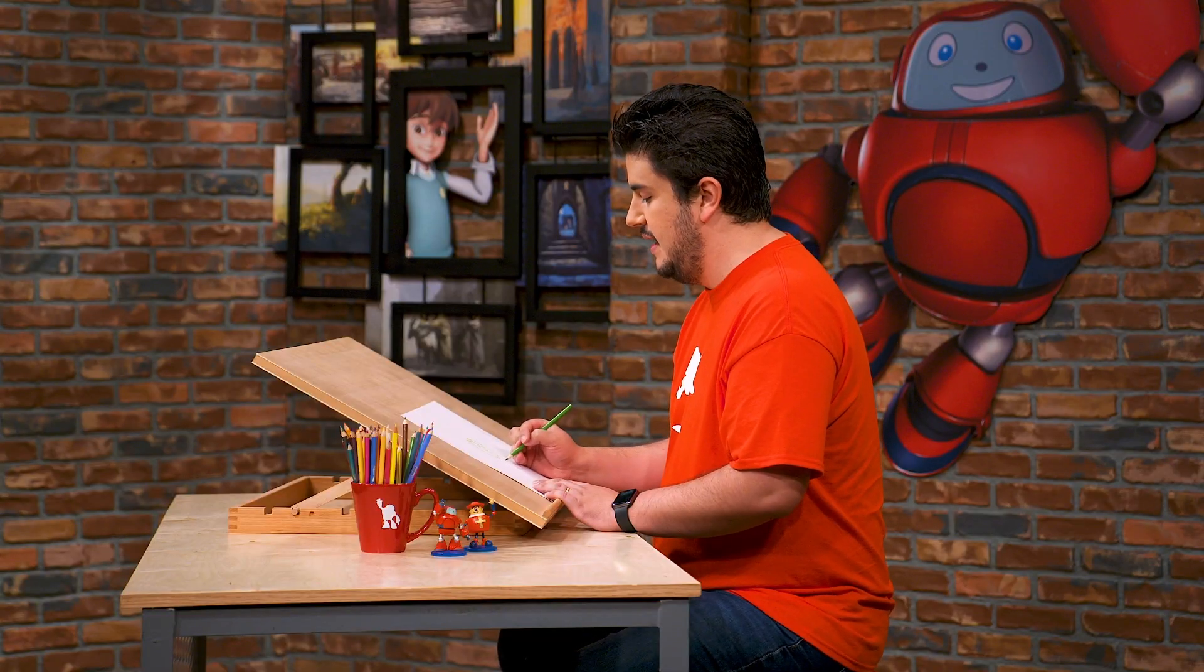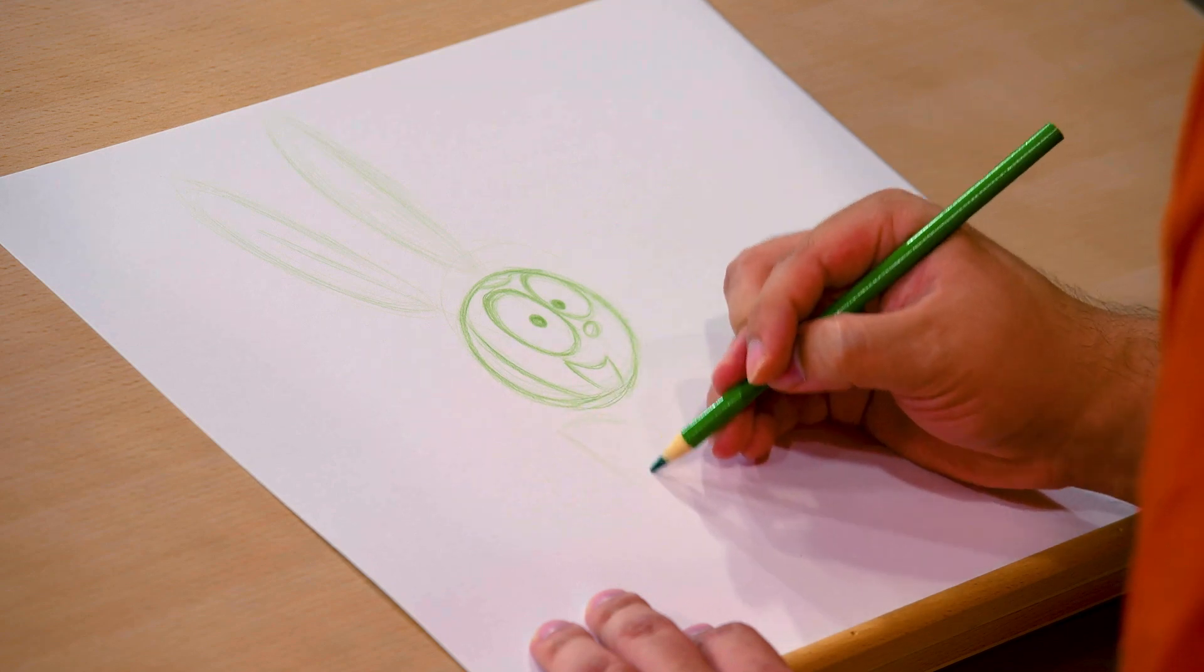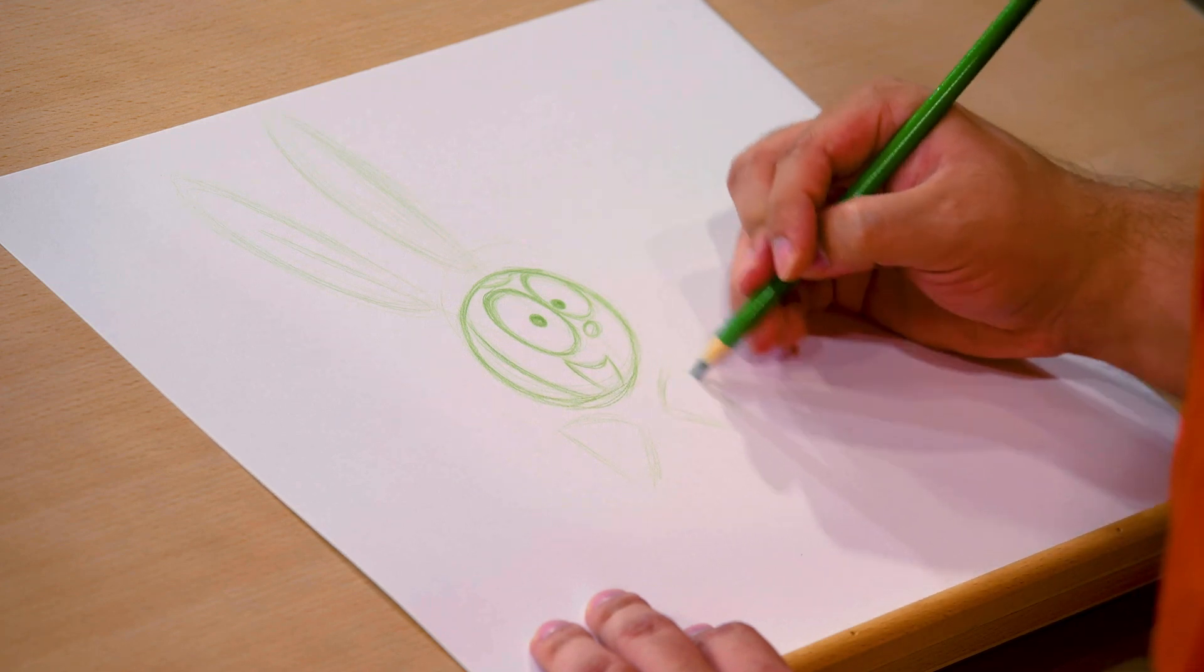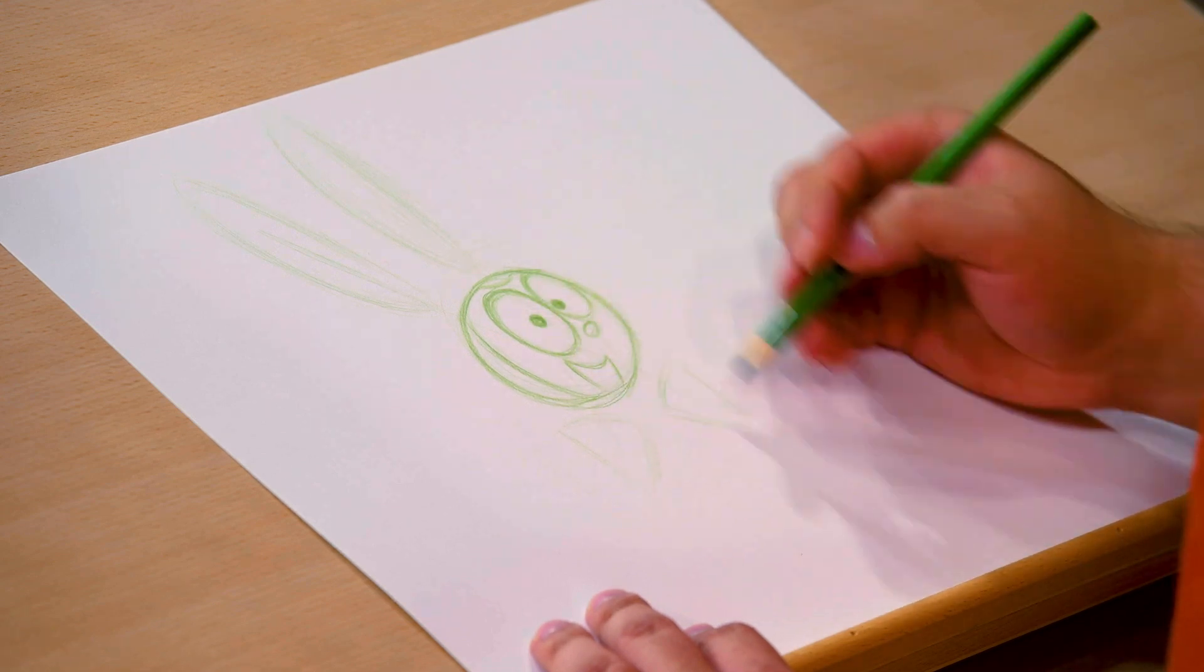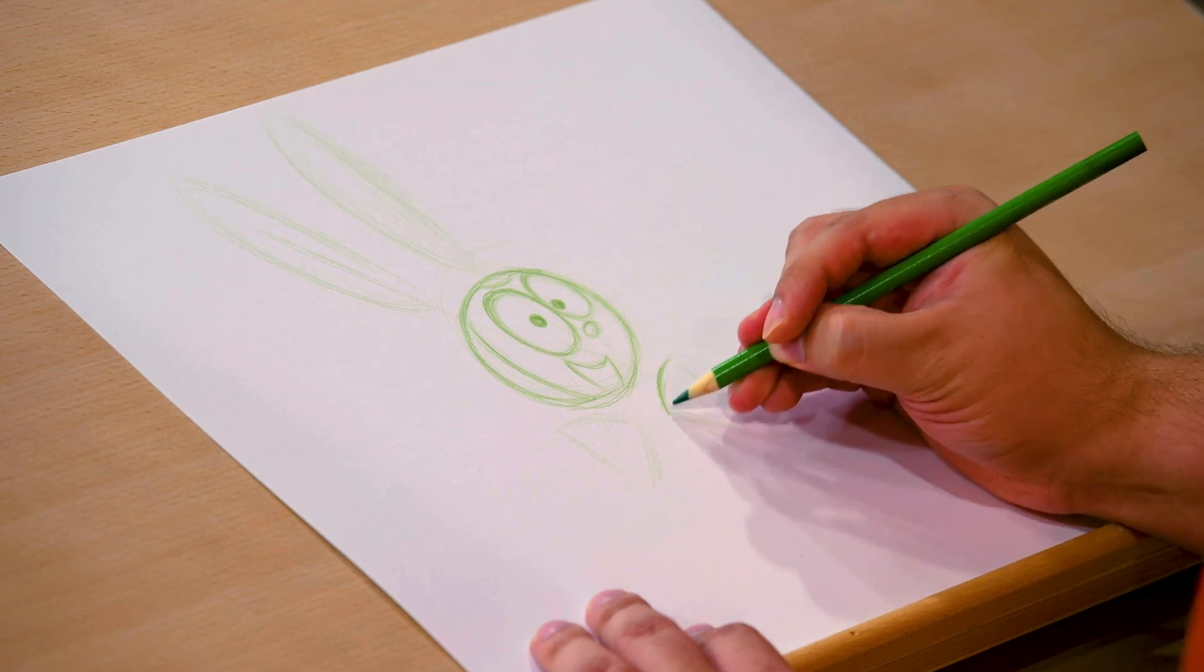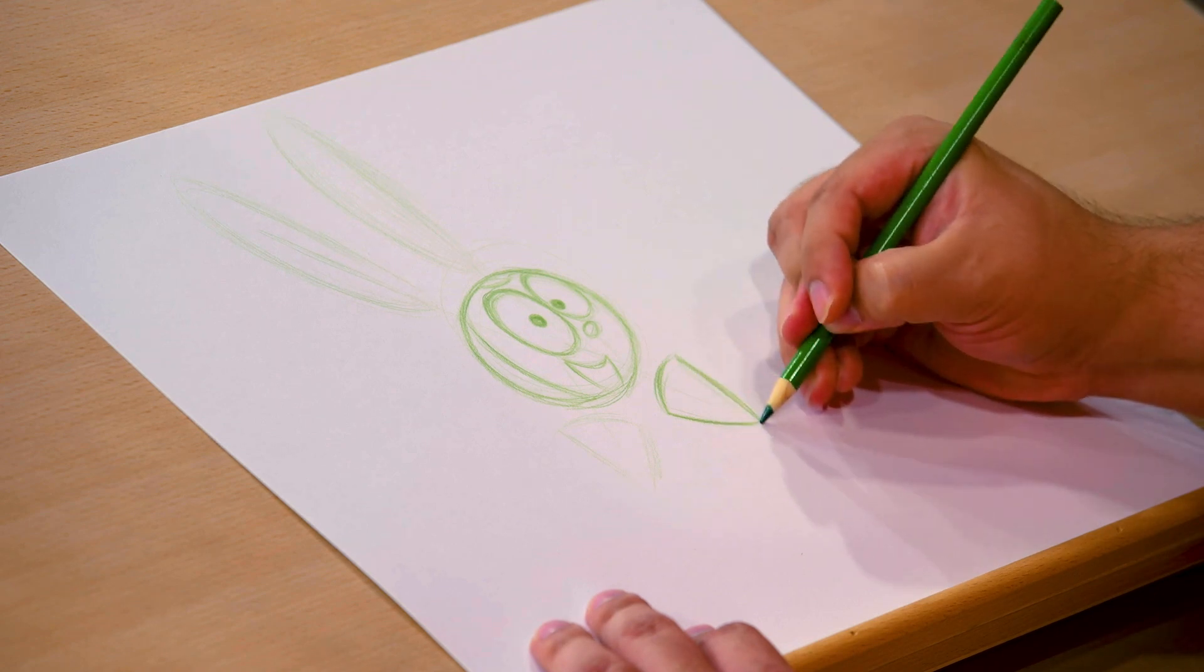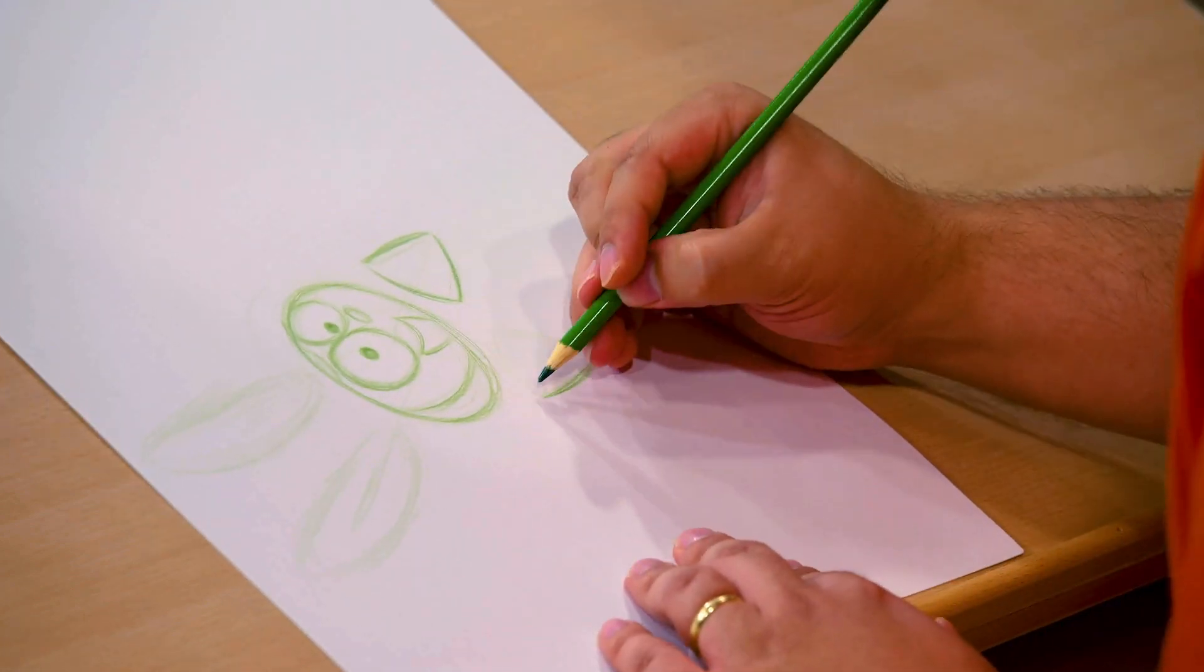And then we're going to do the same kind of thing down here with these fins, which are kind of like big triangles. And again, I want those to point in toward her center there. Looks pretty good. So these triangles are a little bit rounded. So this side we're going to curve and this side we're going to curve. Again, that's why it's good to always start light.